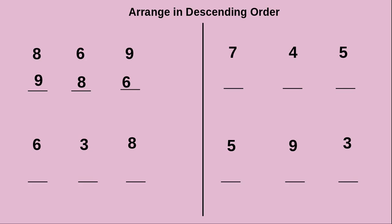Next we will see another example. They have given 6, 3, 8. Which is the greatest number here? Yes, 8 is the greatest number, so we write that first. After that the next greatest is 6. At last, 3 is remaining, so we write it as it is.